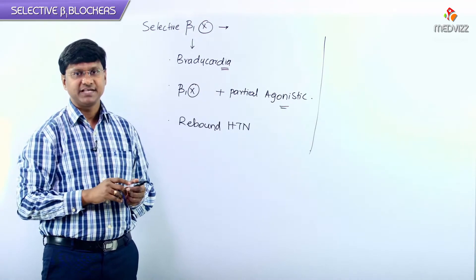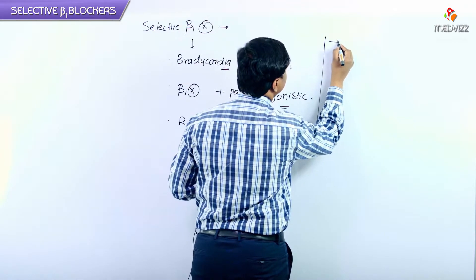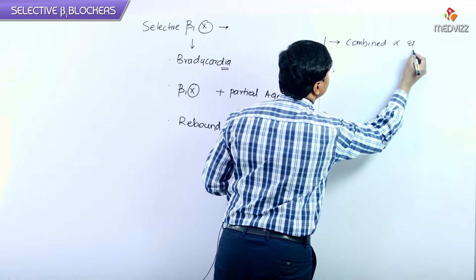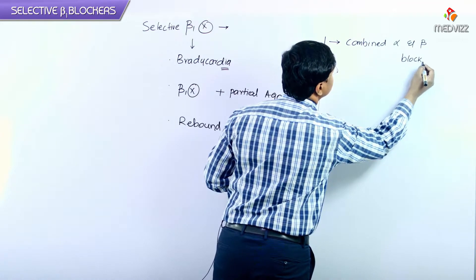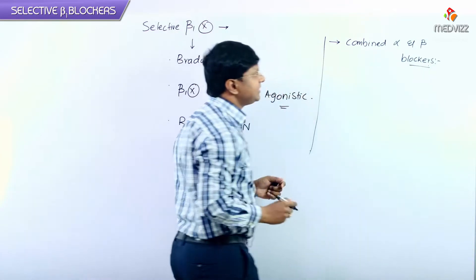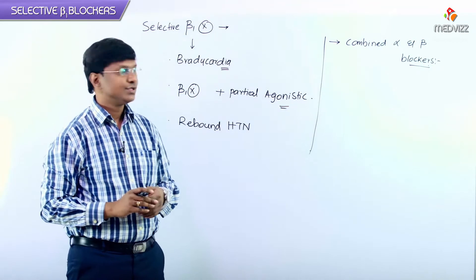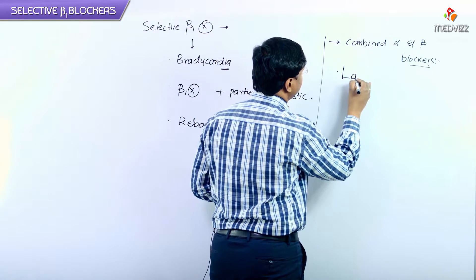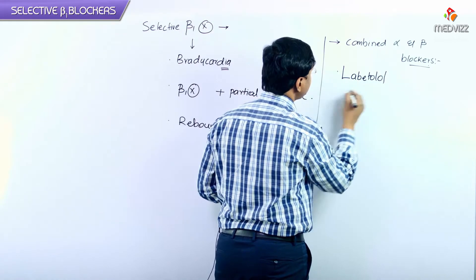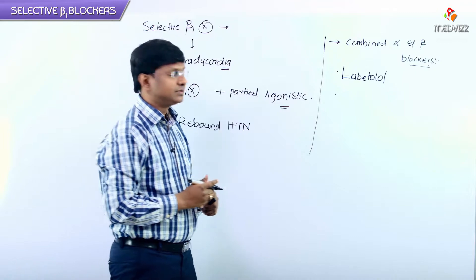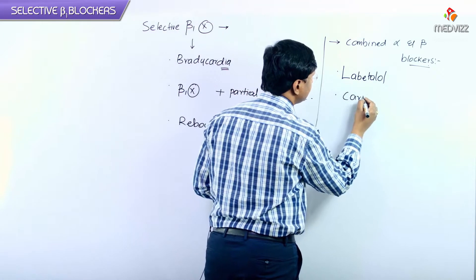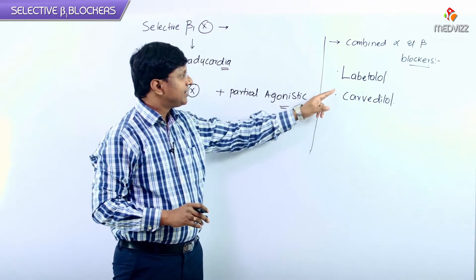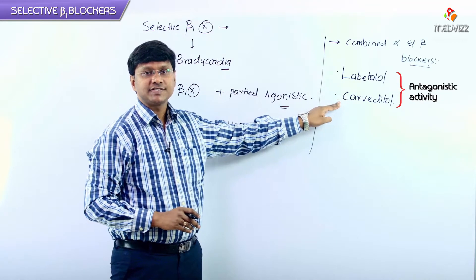Next, we have another group of drugs which block both alpha receptors and beta receptors — the combined alpha and beta blockers. The drugs under this category include labetalol and carvedilol. Both labetalol and carvedilol have antagonistic activity at both alpha and beta adrenergic receptors.